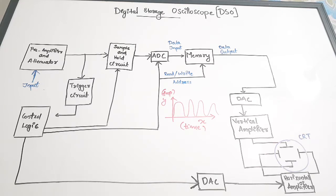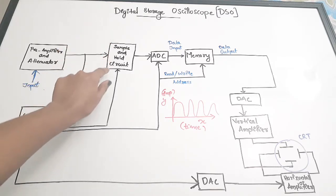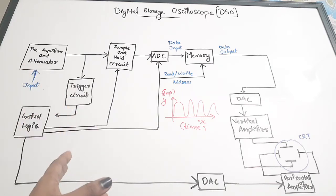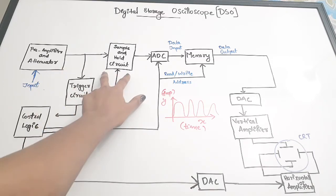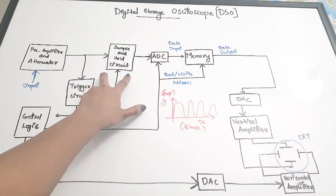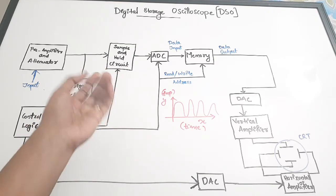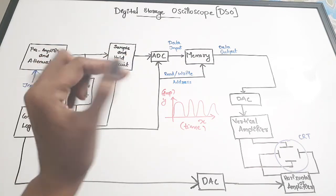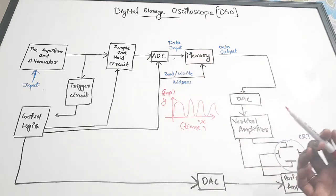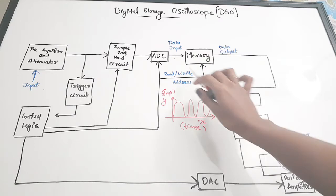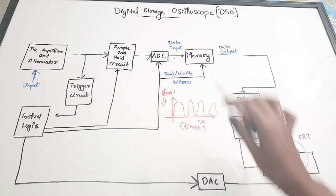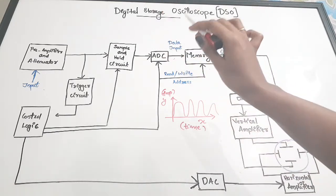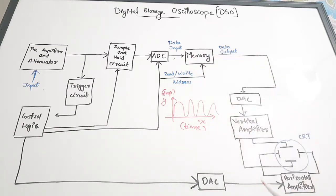For the purpose of digitization, the next unit is a sample and hold circuit. Sampling is the basic process of digitization. The signal which is in analog format is sampled with the help of a sample and hold circuit, and then it is fed to an ADC. The ADC converts it to digital format, so we get digital data at this point. It is then given to a memory unit, and hence the digital data gets stored in memory - that is why we call it a digital storage oscilloscope.